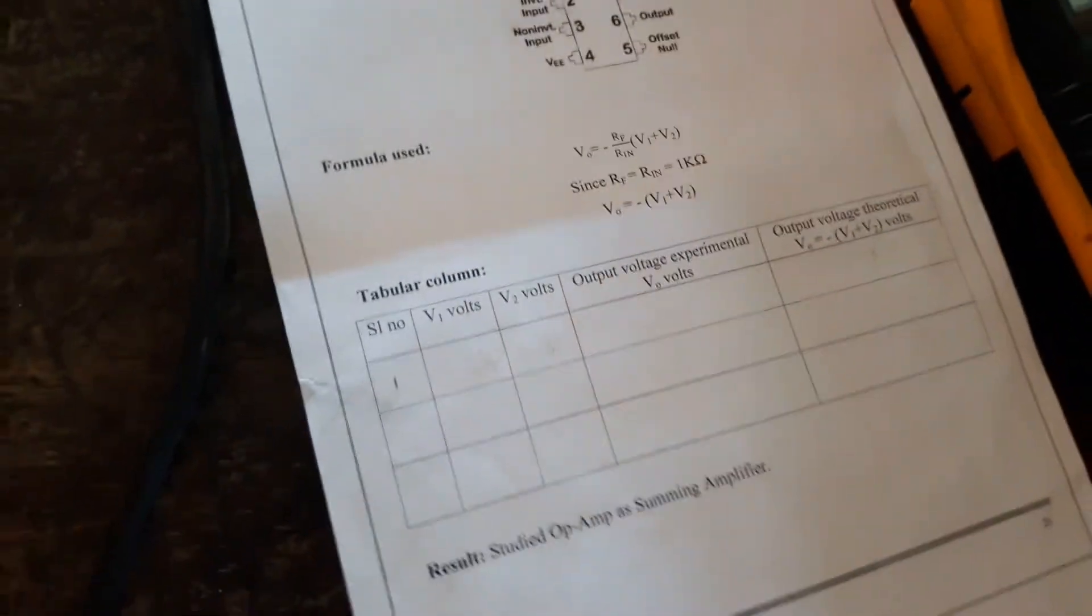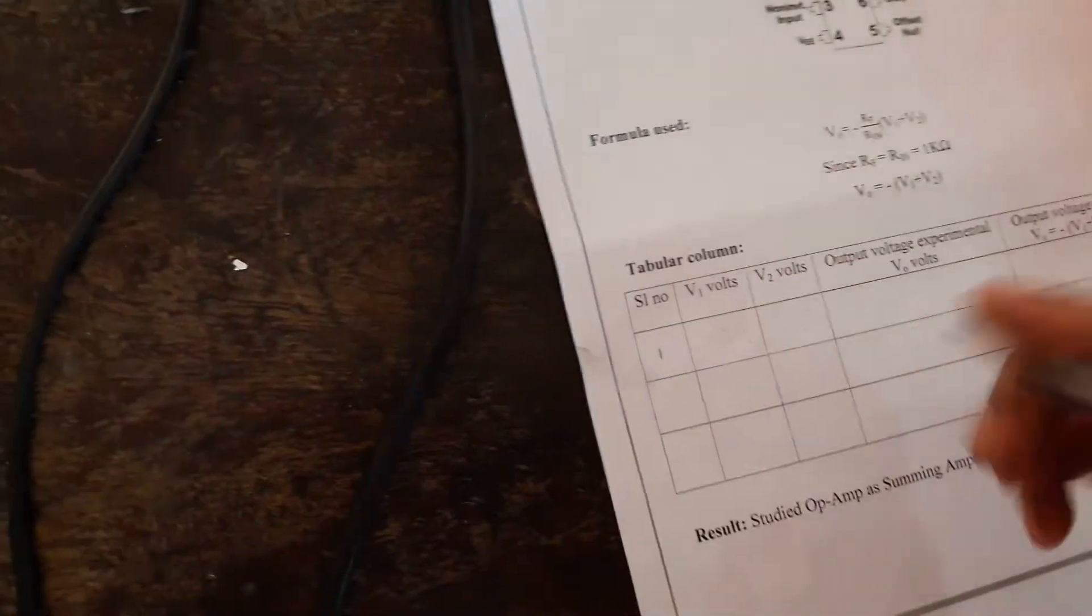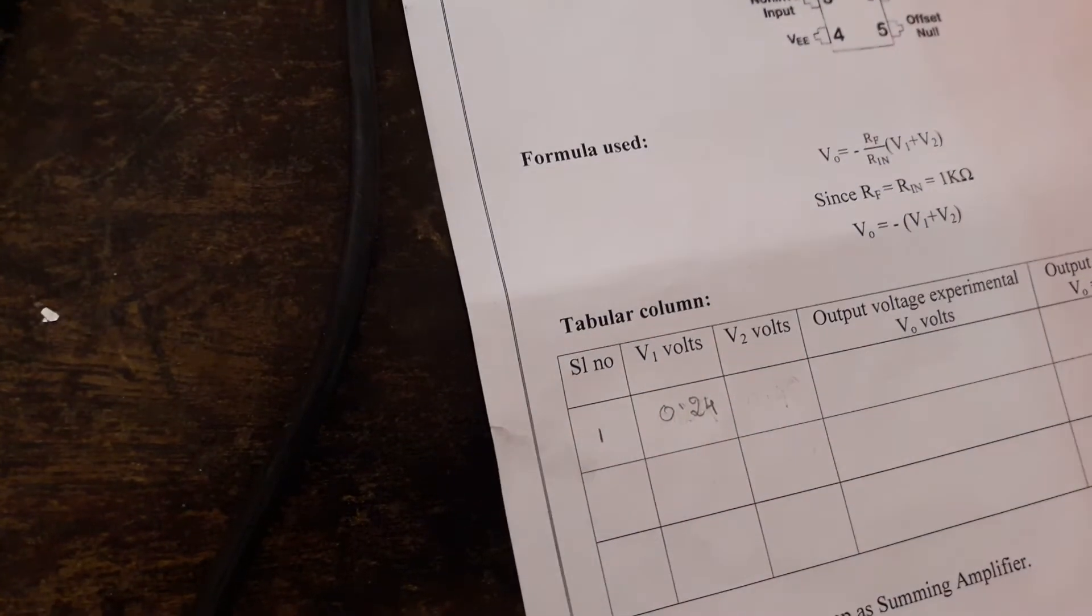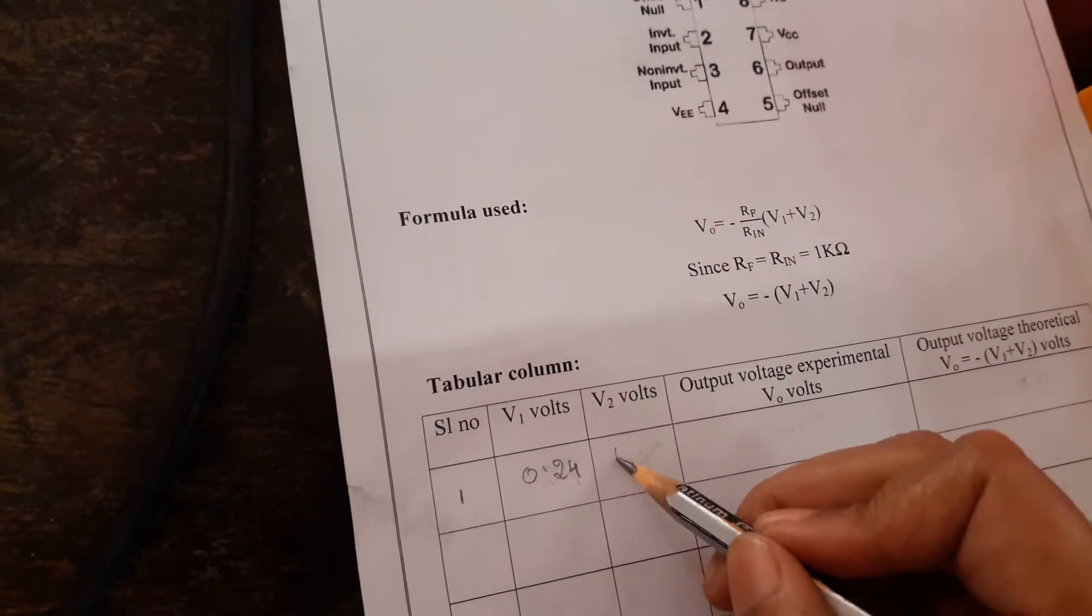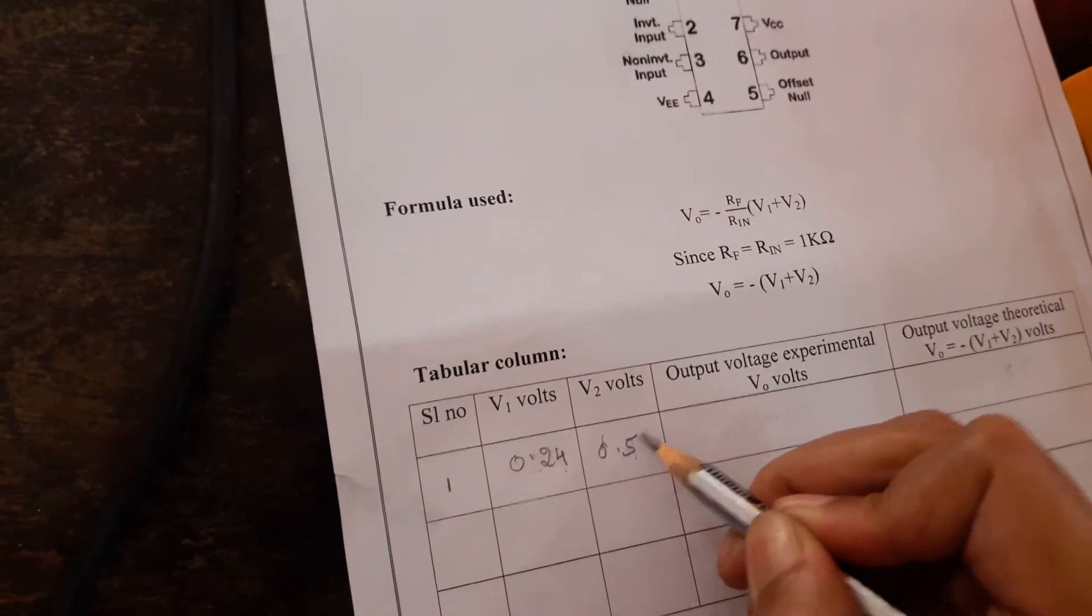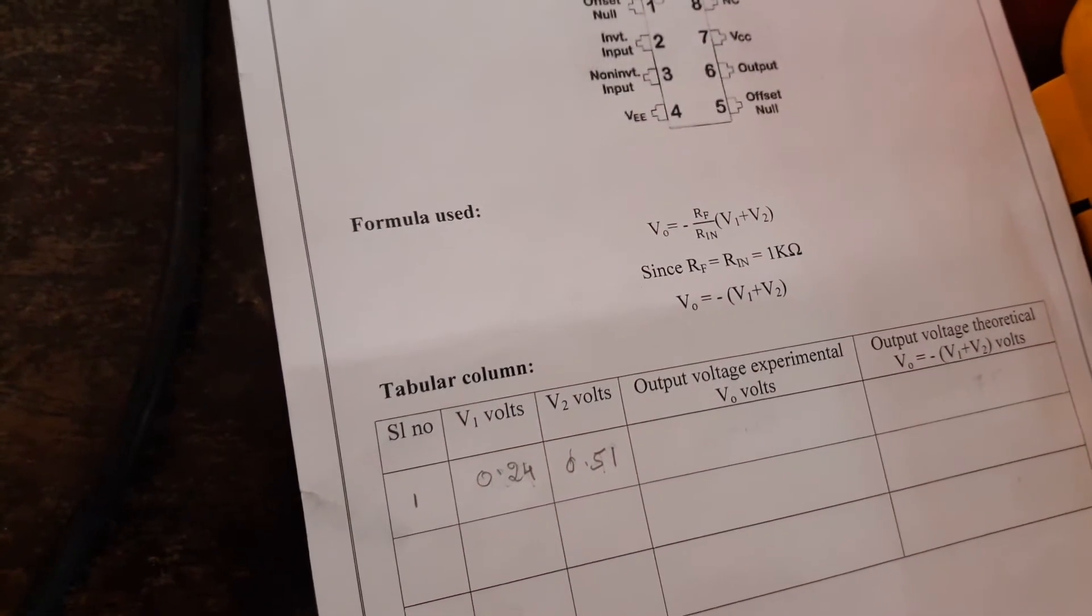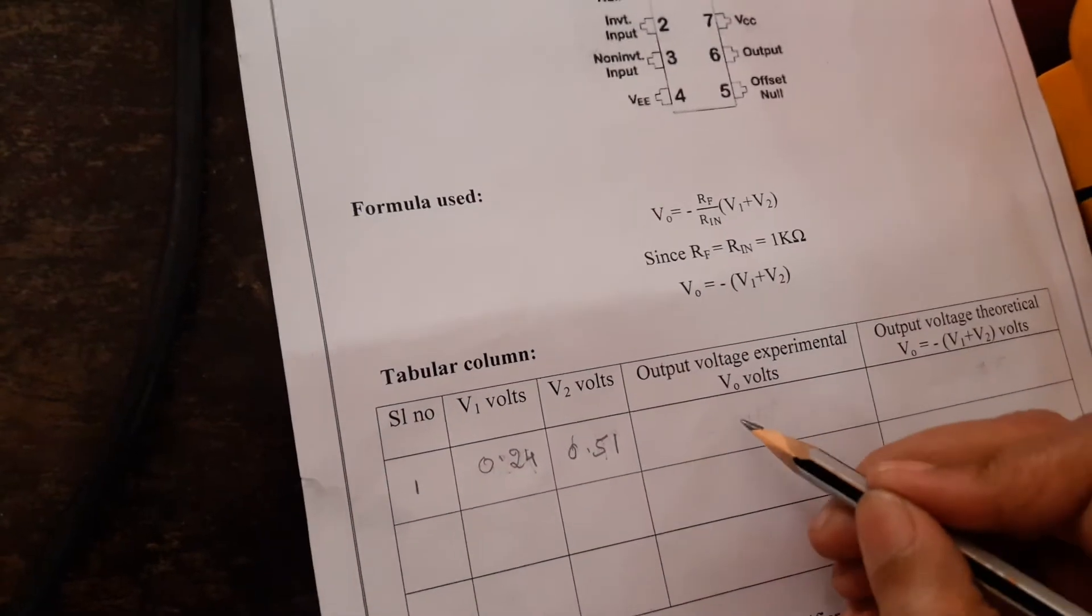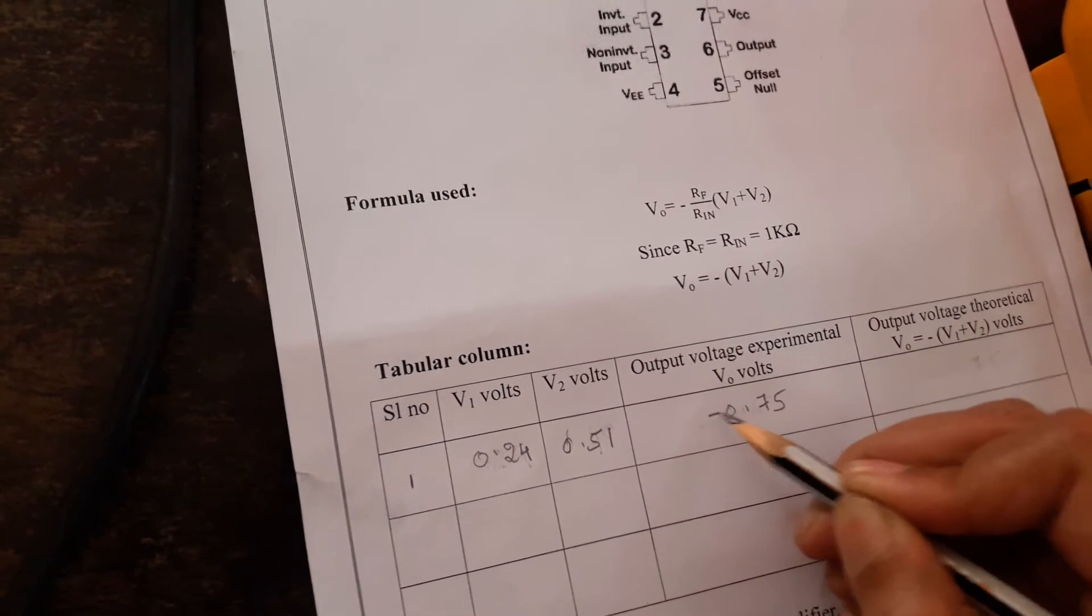The first input is 0.24, second input is 0.51, and the output at pin number 6 is minus 0.75 with a negative sign.